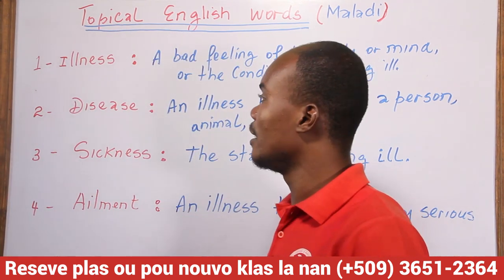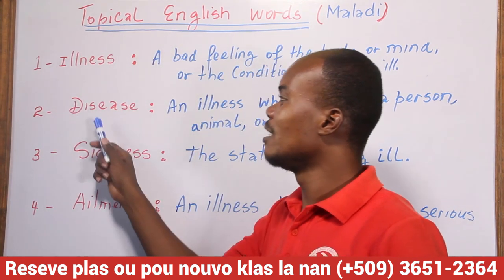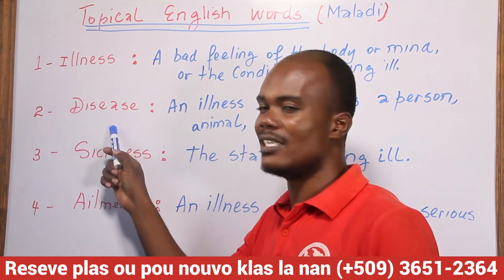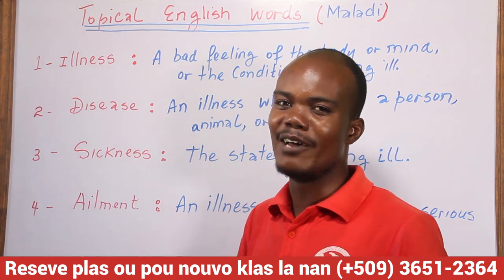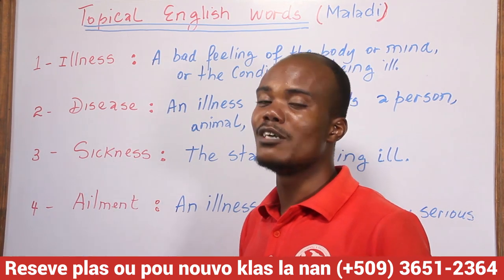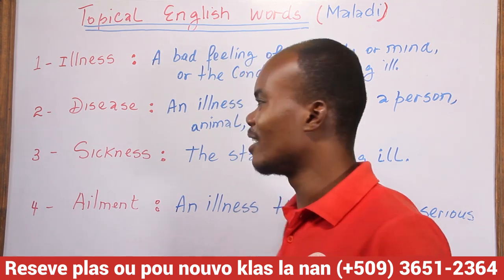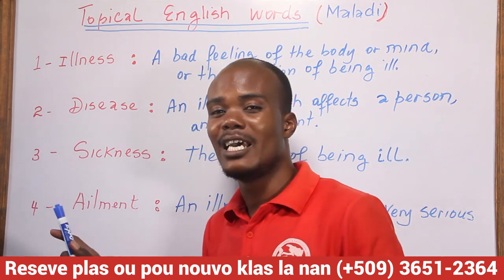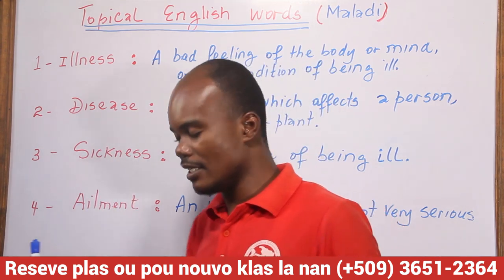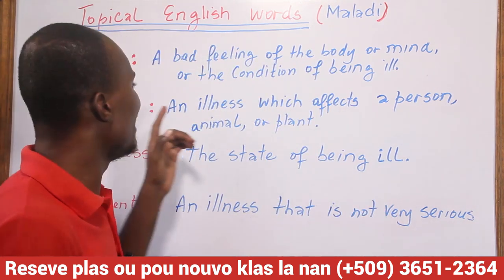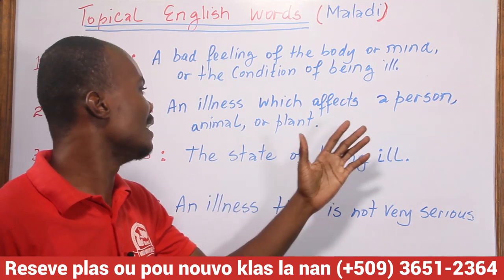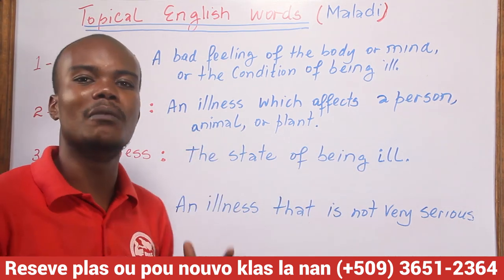The second way you can say 'maladi' in English is 'disease.' Let's practice the pronunciation — people say 'disease.' Does it sound good? Yeah, with practice everything sounds good. Disease. A disease is an illness which affects a person, an animal, or a plant.